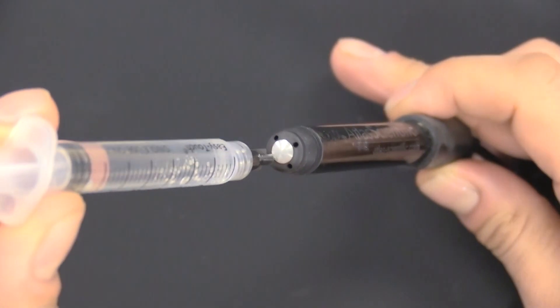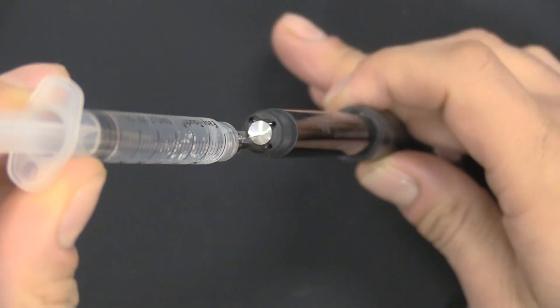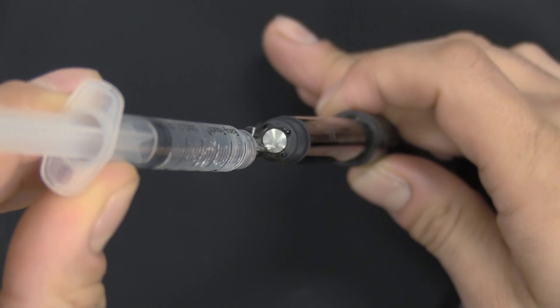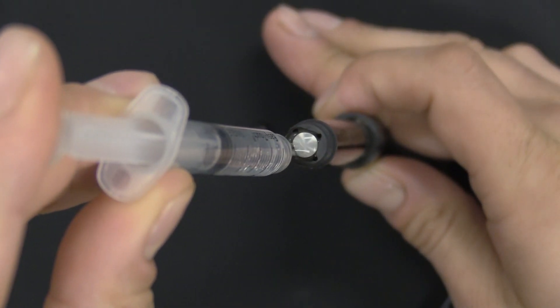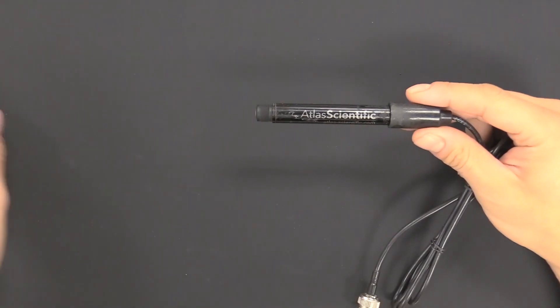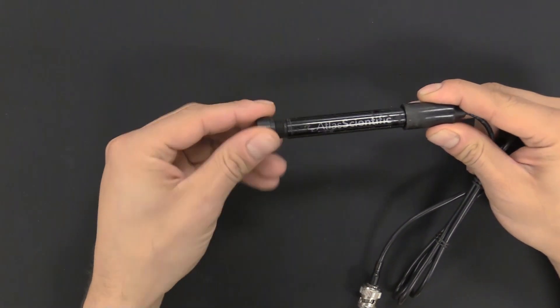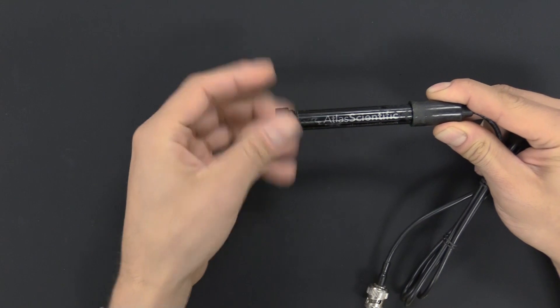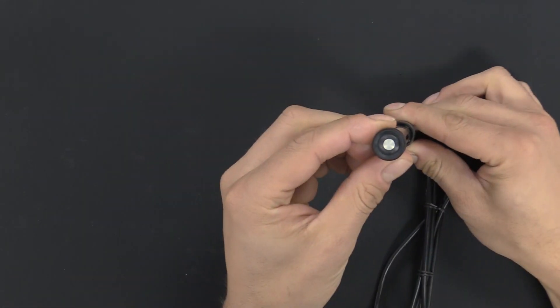Insert the blunt tip needle all the way into the probe and inject the solution. You'll see some of it coming out. That's okay. Let it overflow. You want to be sure you got all of it in there. Now just attach the new membrane cap, and you should be good.